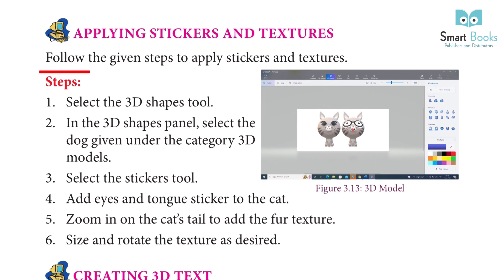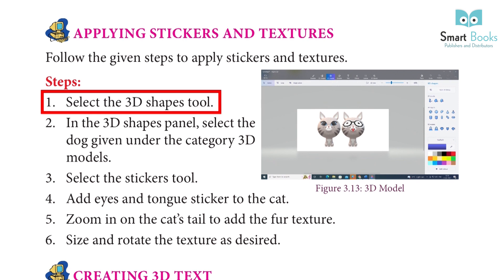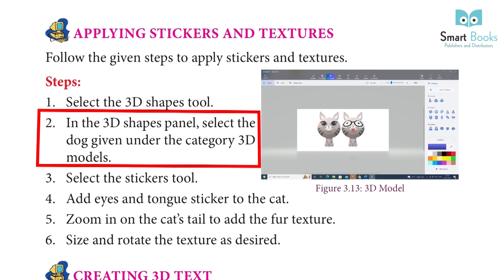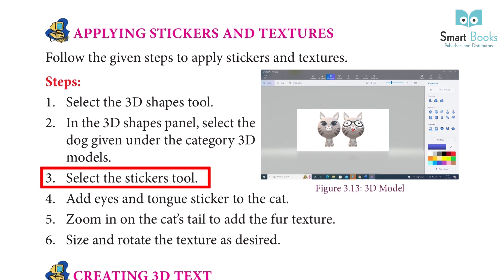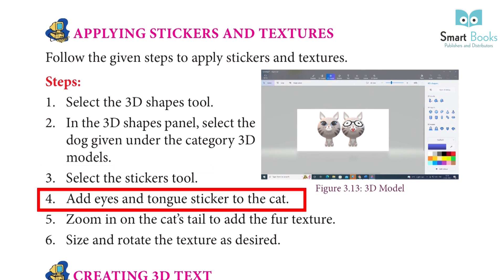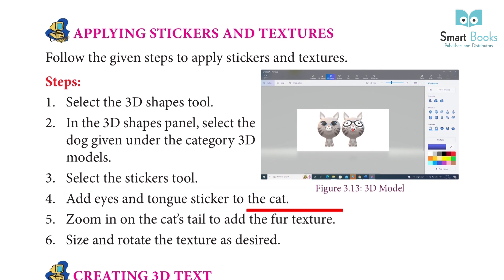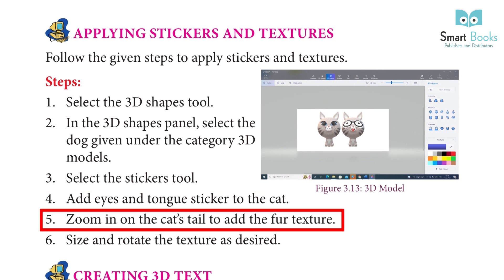Applying Stickers and Textures. Follow the given steps to apply stickers and textures. Step 1: Select the 3D shapes tool. Step 2: In the 3D shapes panel, select the dog given under the category 3D models. Step 3: Select the stickers tool. Step 4: Add eyes and tongue stickers to the cat. Step 5: Zoom in on the cat's tail to add the foot texture. Step 6: Size and rotate the texture as desired.